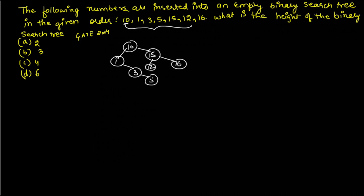They are asking what is the height of this binary search tree. Height is the maximum distance of a leaf node from the root node. The leaf nodes at the deepest level have individual heights of 0, and moving up: height 0 for some nodes, height 1, height 2, and height 3 for the deepest path. Therefore option B is correct.